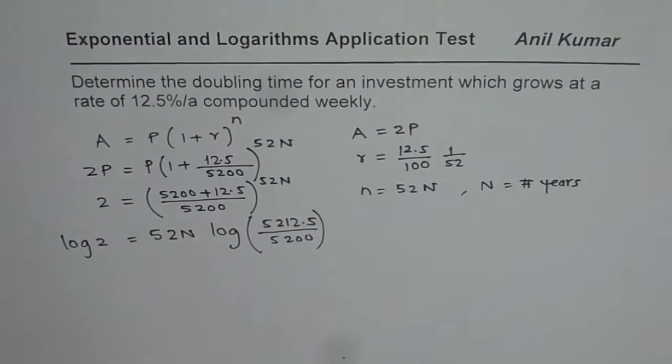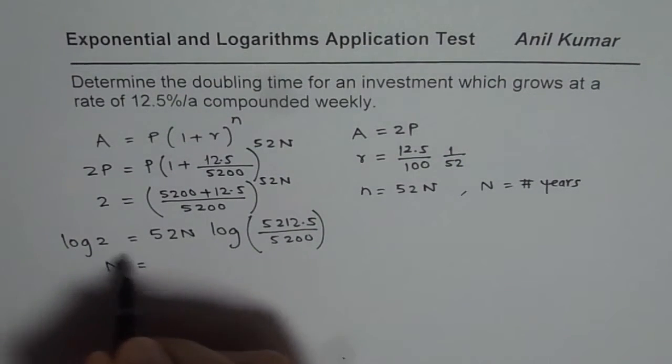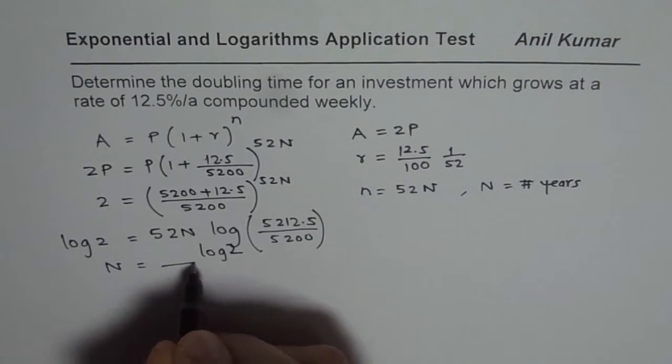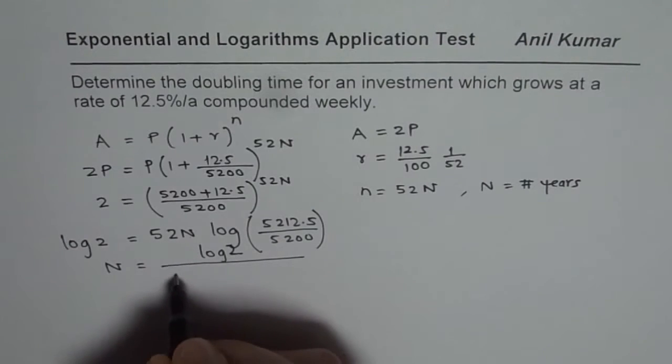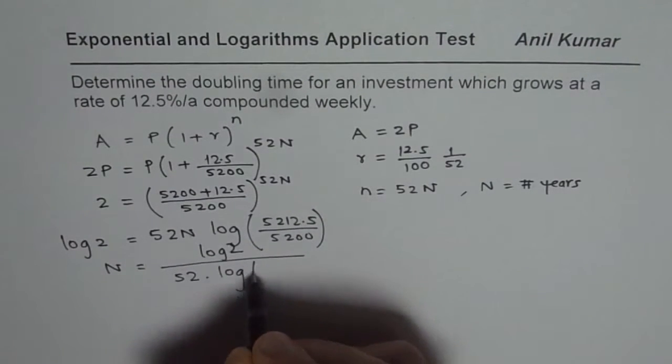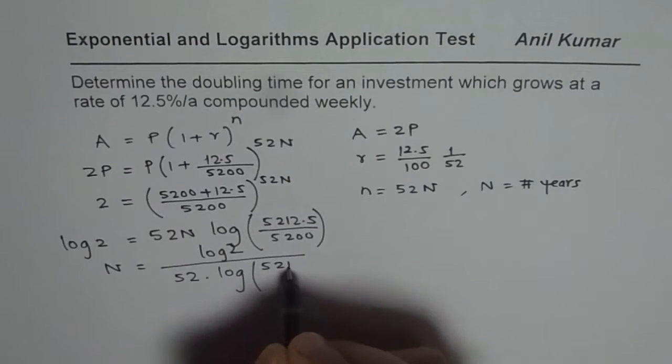Now from here we can calculate n. So n is equal to log of 2 divided by all this, divided by 52 times log of 5212.5 divided by 5200.